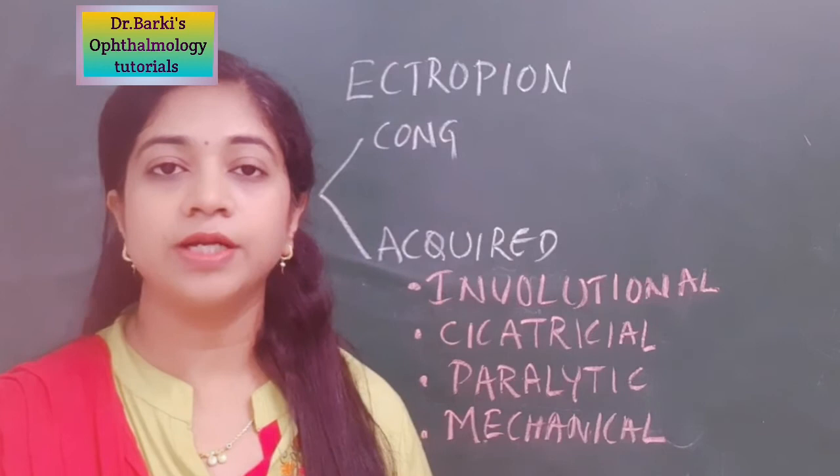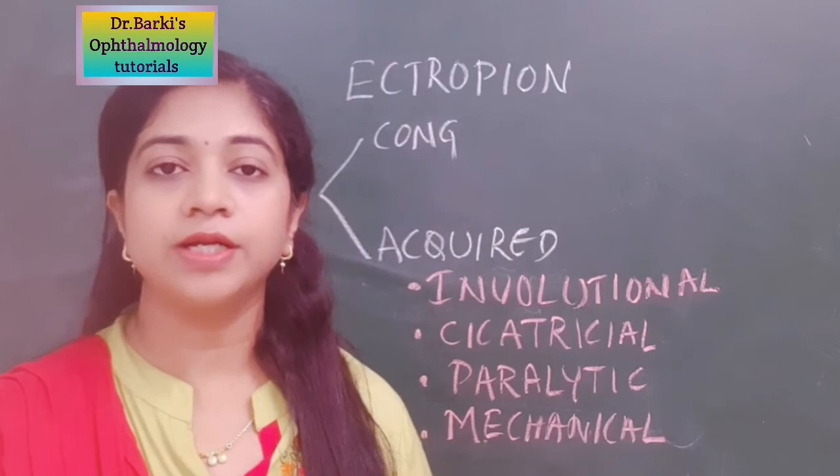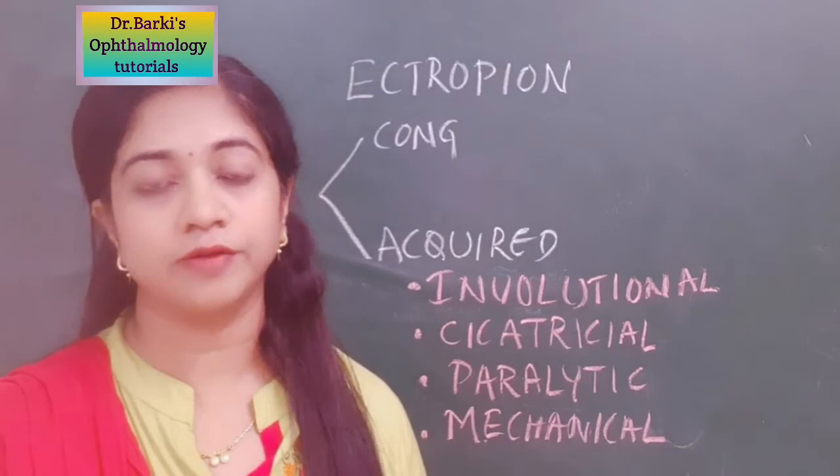There can also be incomplete closure of the eyelids when there is a severe degree of ectropion, leading to corneal involvement as well. So those are the symptoms of ectropion.